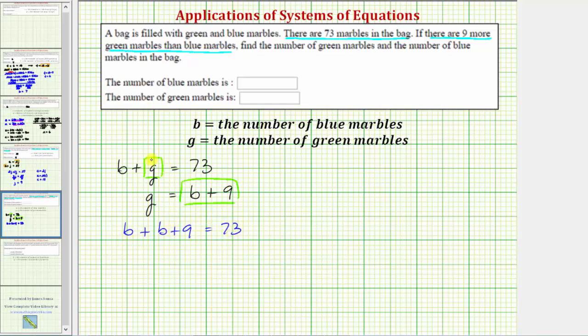Combining like terms, b plus b is equal to two b, one b plus one b.